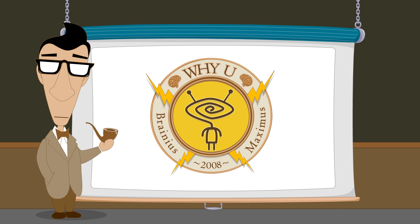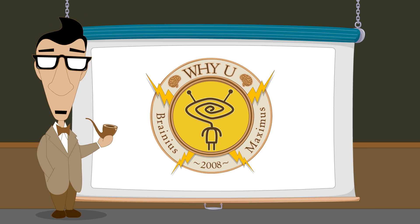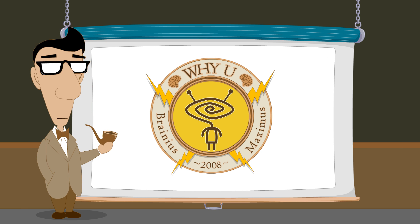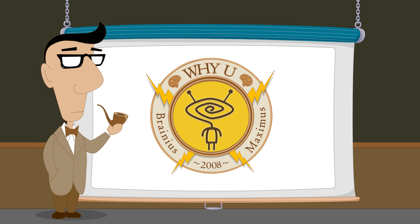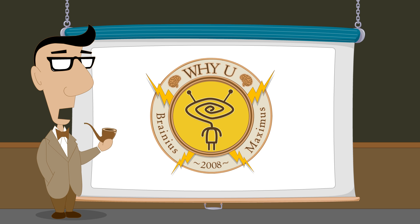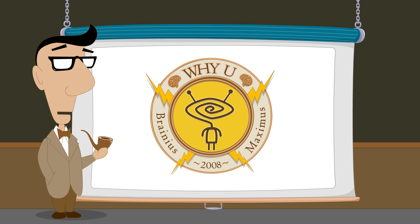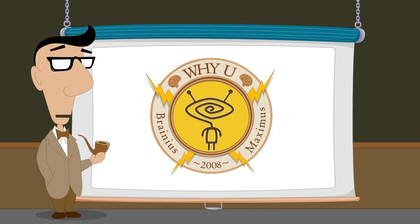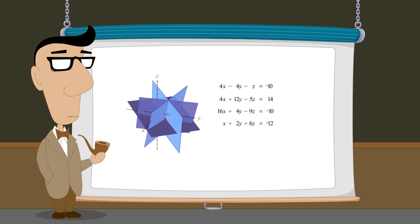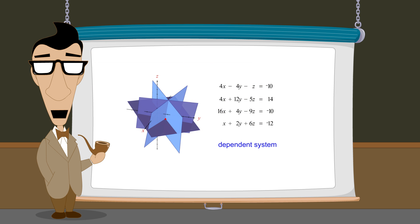Hello, I'm Professor Von Schmohawk and welcome to Why U. In the previous lecture, we saw that a system of linear equations is called a dependent system if it contains any equations which are dependent.